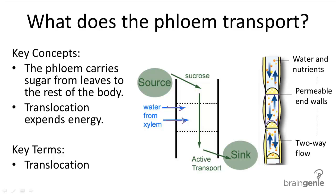So brief summary: xylem transports water and dissolved minerals up the plant stem; phloem transports sugar down from the leaves. Xylem water transport does not expend energy, and phloem transport — or sugar transport — does. You can see this illustrated in the example of this cross-section of a plant stem.